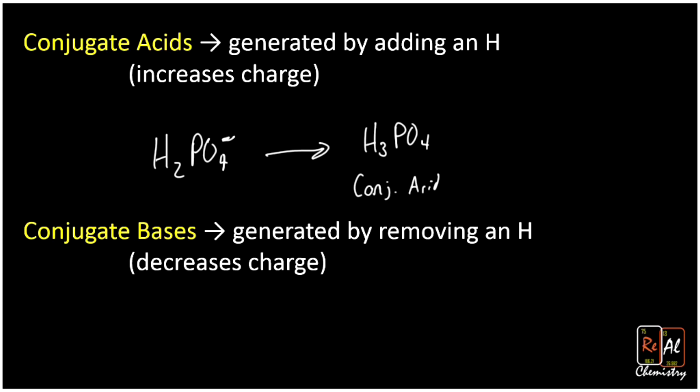Conjugate bases are generated by removing an H. So we see that H2PO4- can go to its conjugate base by dropping a hydrogen, HPO4. Since it lost something positive, it goes from negative one to now negative two. And that's the conjugate base.